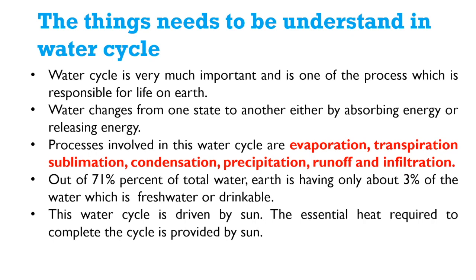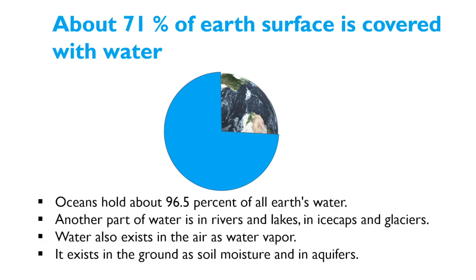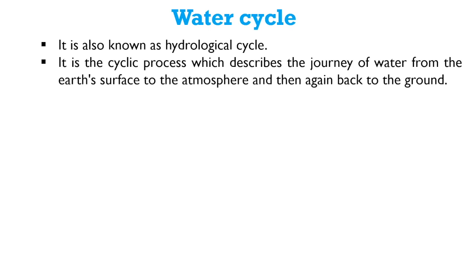This water cycle is driven by the Sun — the essential heat required to complete the cycle is provided by the Sun. About 71% of Earth's surface is covered with water. This water exists in different forms: oceans hold about 96.5% of all Earth's water. Another part is in rivers, lakes, ice caps, and glaciers. Water also exists in the air as water vapor, in the ground as soil moisture, and in aquifers.